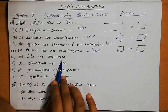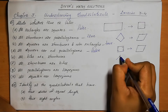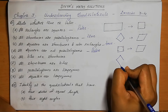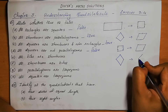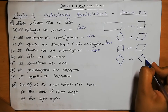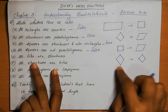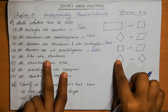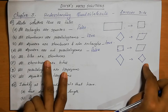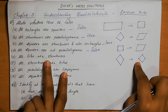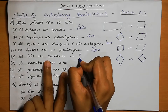All kites are rhombuses. A kite looks like this. Rhombus means all sides are equal. In a kite, these two sides are equal and those two sides are equal, but not all four sides are equal. So all kites are rhombuses is not possible — this is a false statement.